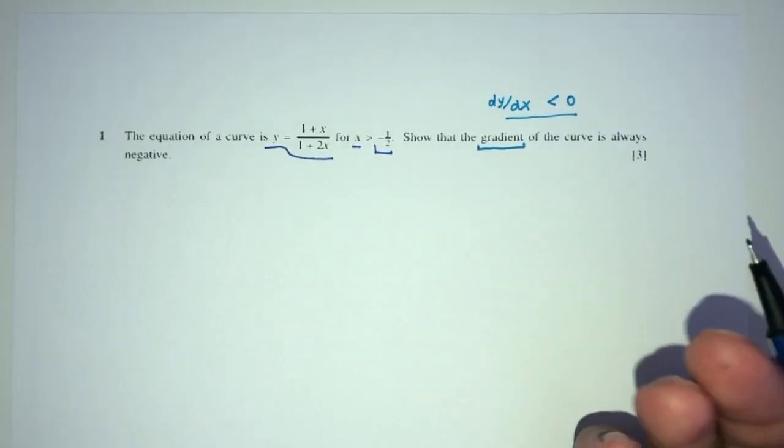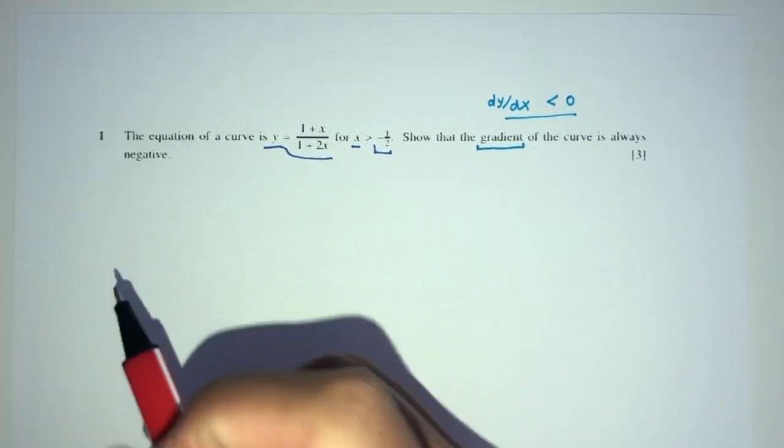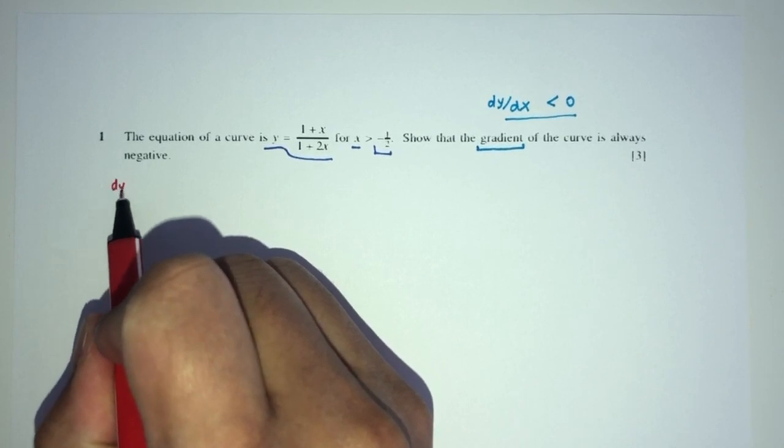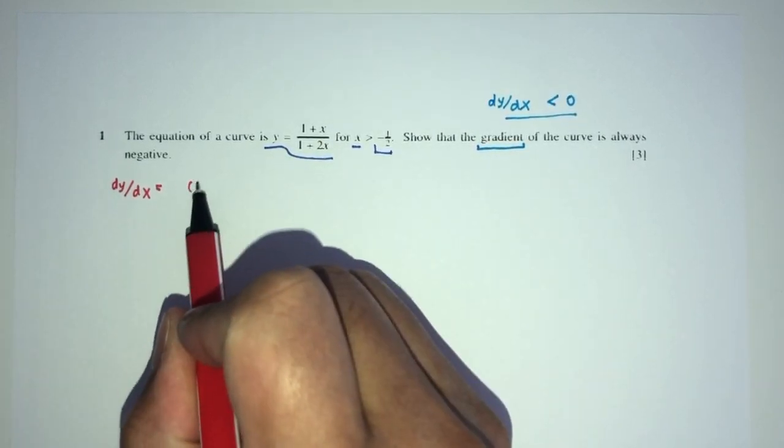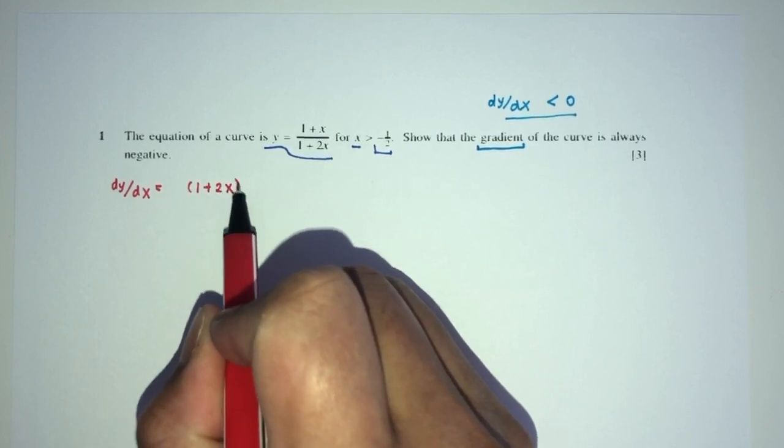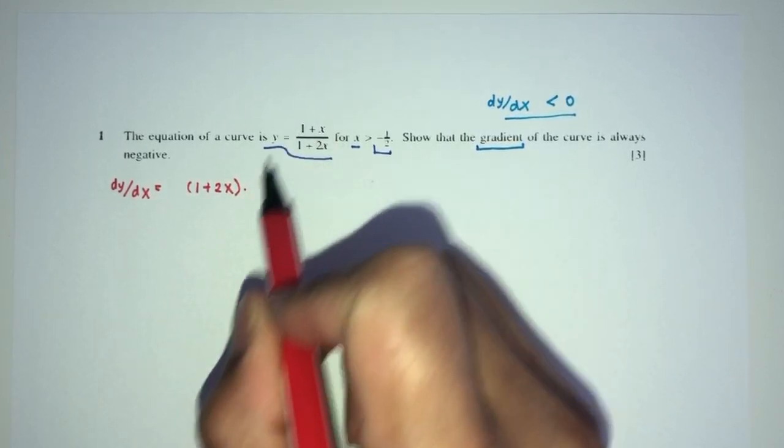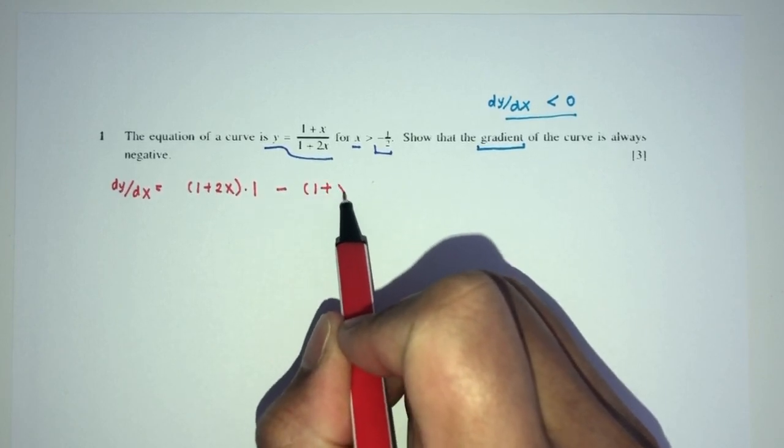As you can see, this one is a fraction, so you have to use the quotient rule. dy by dx will be, first write the base as it is, multiply by d by dx of this one, which is just 1, then minus the top as it is,